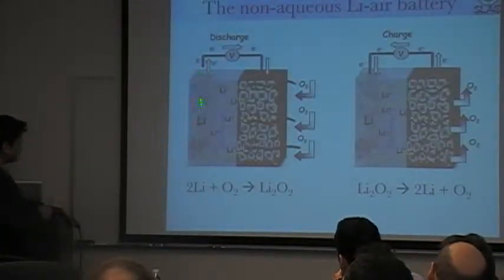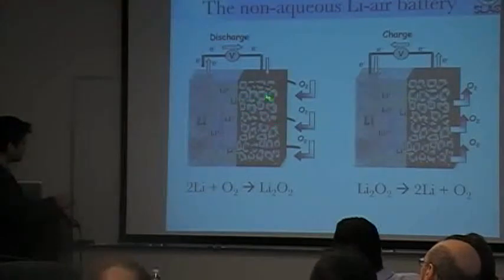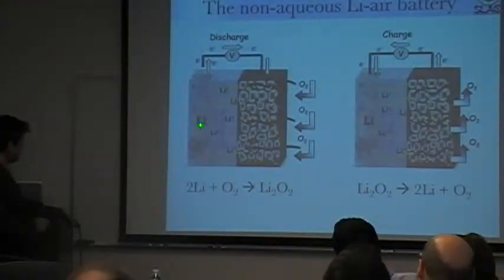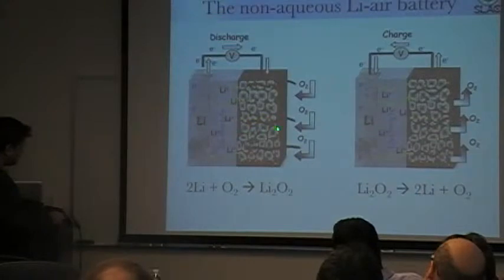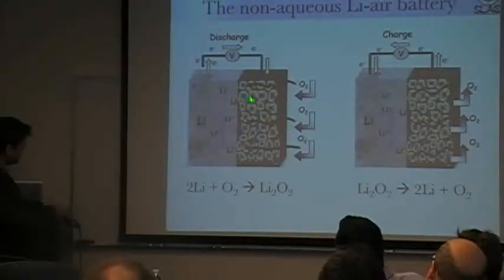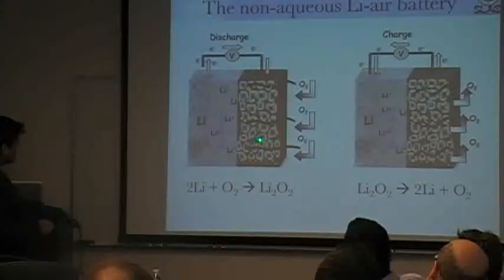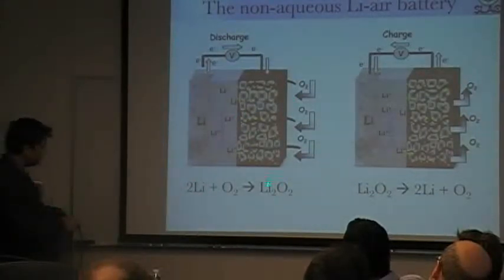You have the lithium metal at the anode, and then you have some carbon particles. Oxygen is fed in, and during discharge, lithium undergoes oxidation — it becomes Li+, floats through, and goes to the cathode. The electrons flow through the external circuit. Oxygen comes in along with electrons from the external circuit — two of them — so two lithium-plus and two electrons combine to form lithium peroxide.